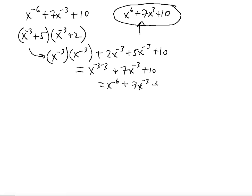Let's do one more example — a slightly more complicated one. Suppose I give you x to the negative one-half power minus 13x to the negative one-fourth power plus 40. How would you factor this expression involving negative exponents? Remember, it's not a polynomial.